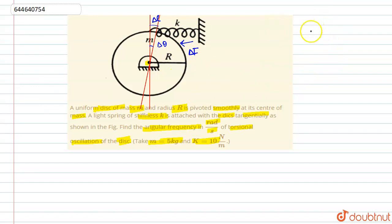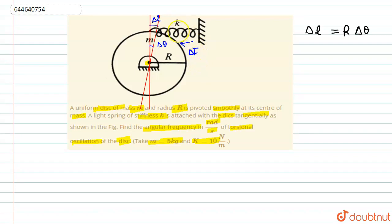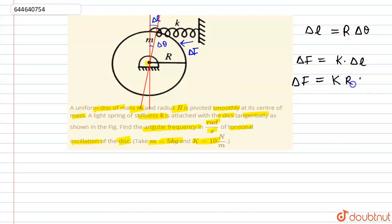We can write that delta l equals r (the radius of the disc) times delta theta. The force delta f is the restoring force of the spring, so we can write delta f = k times delta l. Substituting, delta f = k·r·delta theta.